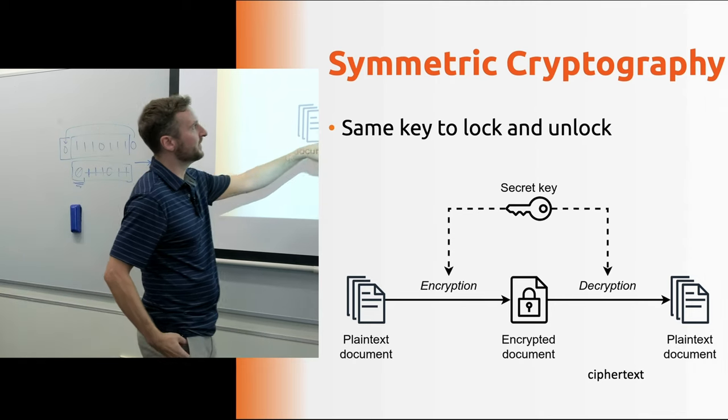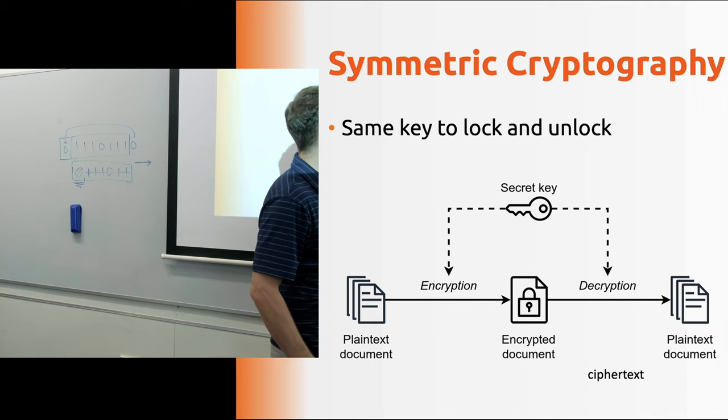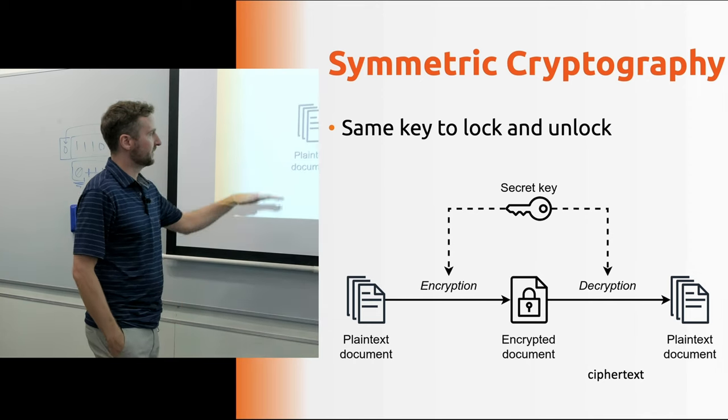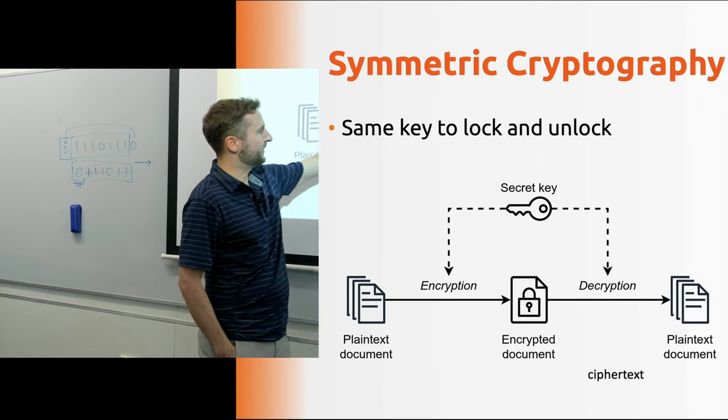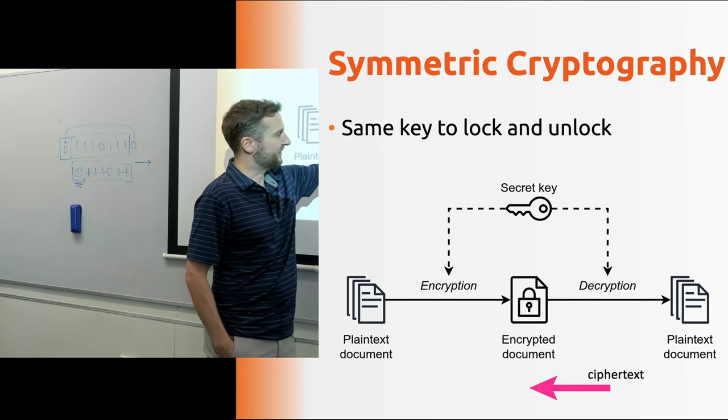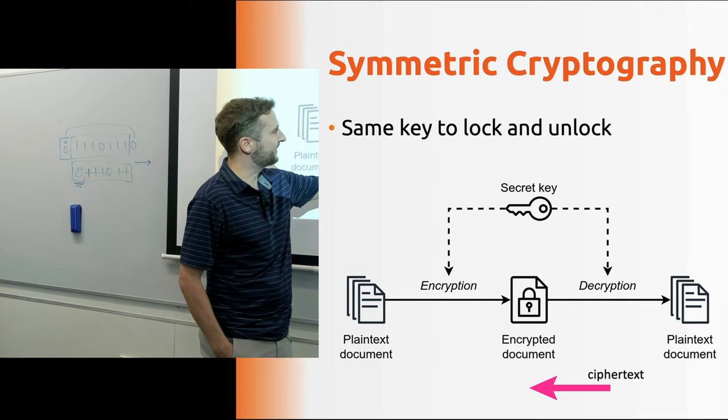secret key, to do both encryption and decryption. So we bring in our plain text left to right, use the key to encrypt it. And we get a cipher text. That's a little bit, that's out of place. That should be over here. We got cipher text.